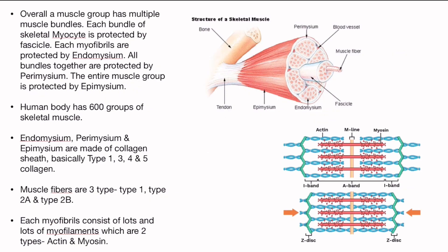Overall, a muscle group has multiple muscle bundles, as you can see in this photo. Each bundle of skeletal myocytes is protected by fascicle. Each myofibril is protected by endomysium. All the bundles together are protected by perimysium, and the entire muscle group is protected by epimysium. Matlab yeh jo upar wale photo mein dhek rahe ho ki pura manks peishi ek patla chadar se ghira hua hai jisko hum kehte hain epimysium.